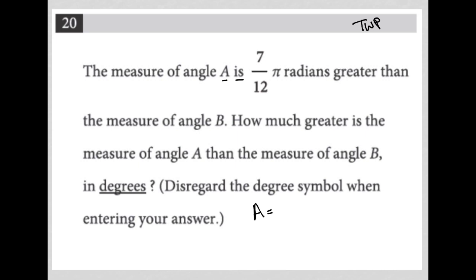I'm saying A is 7/12π radians greater than angle B. So that means I have what B is, but A is the same measurement as angle B plus 7/12π radians.